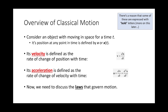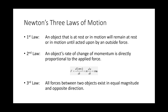Now we're going to discuss the laws that govern motion. Even if you haven't had physics, you've probably heard of Newton's three laws of motion. The first law: an object at rest or in motion will remain so until acted upon by an outside force. The second law: an object's rate of change of momentum is proportional to the applied force — basically F = ma, where acceleration is proportional to force and the constant of proportionality is mass. The third law: every action has an equal and opposite reaction — all forces between two objects exist in equal magnitude and opposite direction.